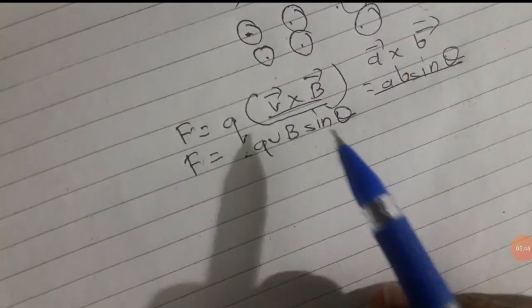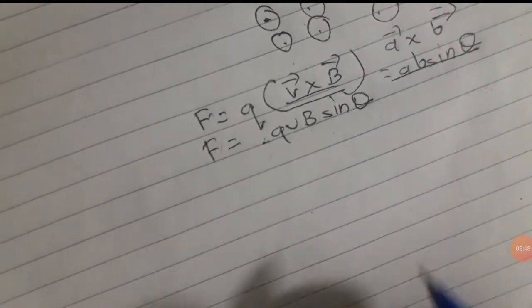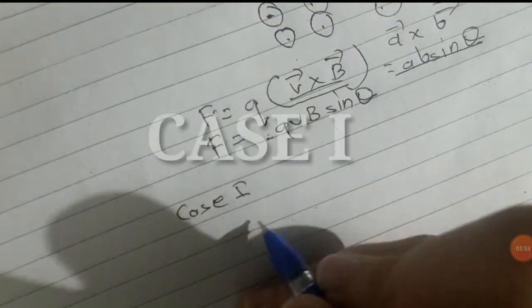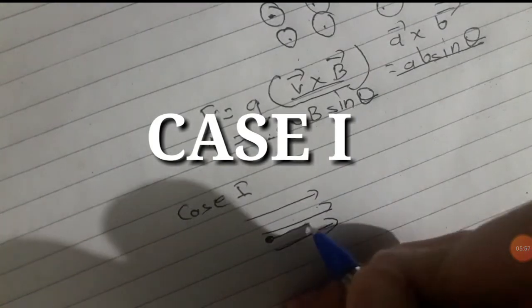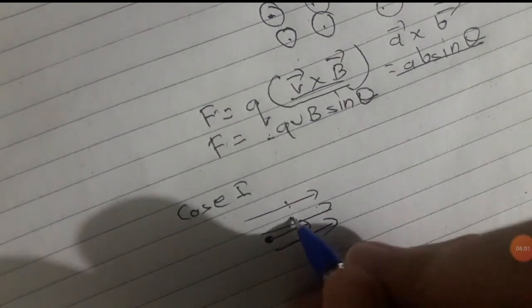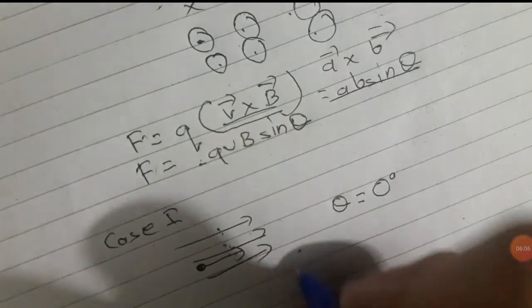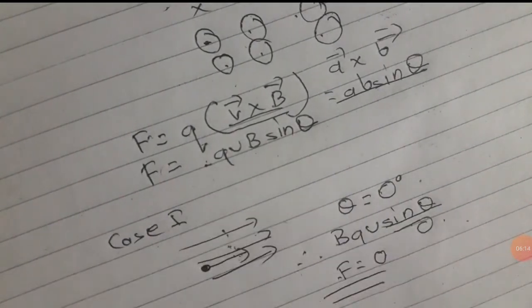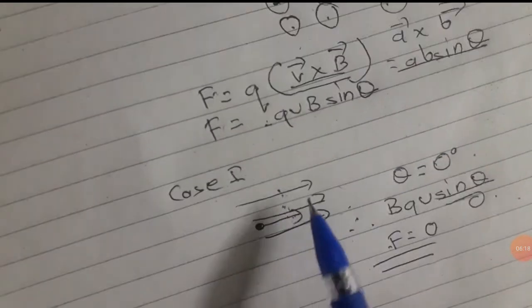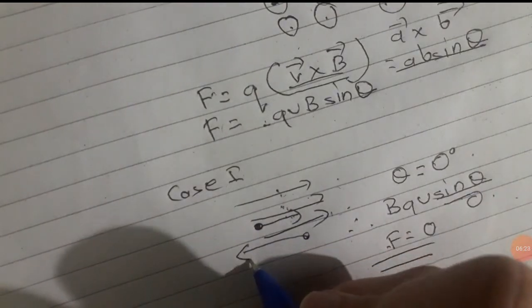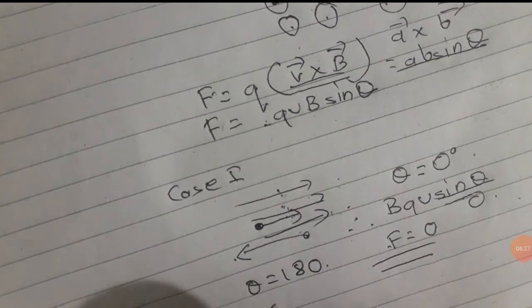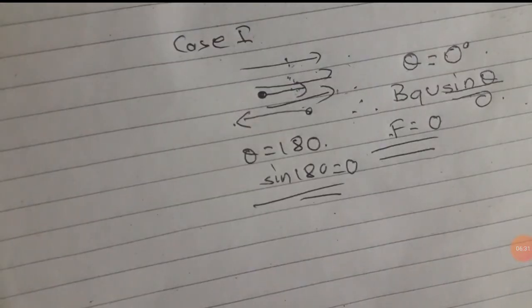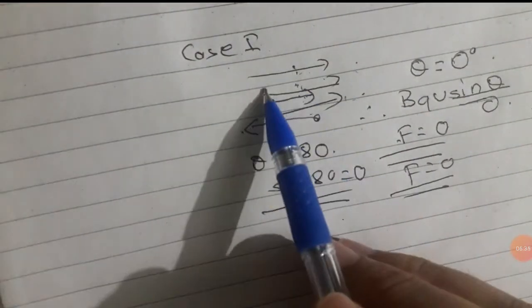This is a method to find the direction of the force in a magnetic field. I am going to show you three cases. In Case 1, the magnetic field is parallel to the velocity — theta is 0 degrees, so sinθ = 0, and force equals zero. Similarly, in the opposite direction, theta is 180 degrees, sinθ is still 0, so force is 0.